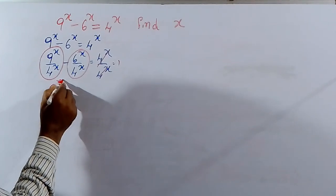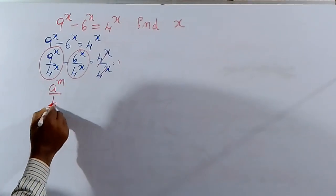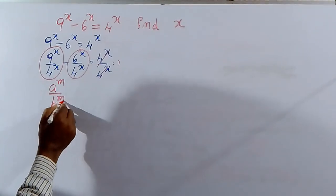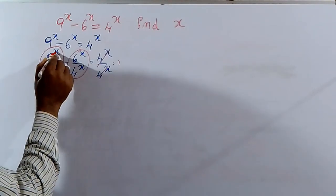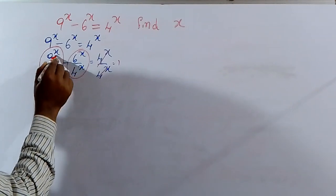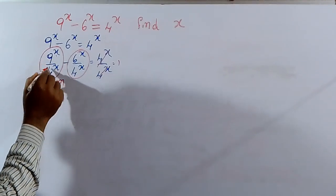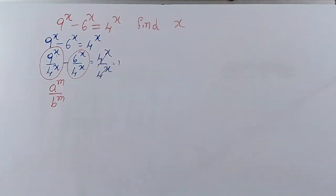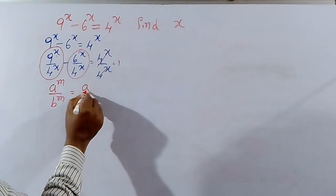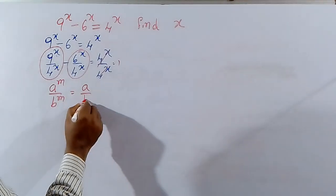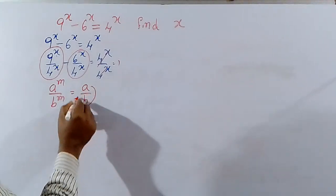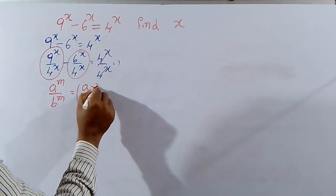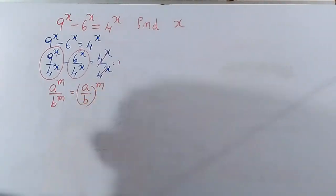A power m by B power m — the exponents are the same, bases are different. So, A power m by B power m is equal to A by B whole power m. We can arrange this.